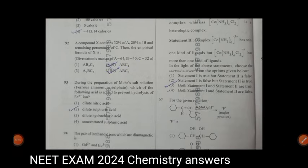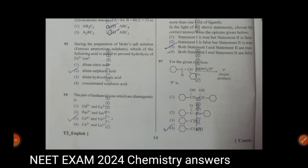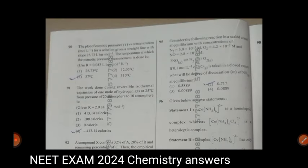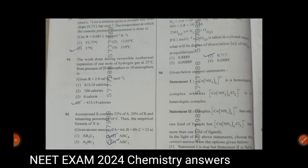Question 93, during the preparation of more salt solution. Answer is dilute sulfuric acid, second. Question 94, the pair of lanthanoid ions which are diagrammatic is third one. Question 95, consider the following reactions in a sealed vessel. Answer is second one.